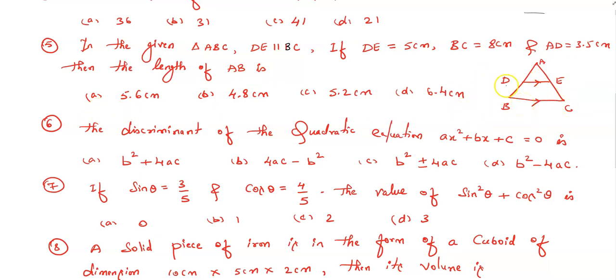Question number six: the discriminant of the quadratic equation ax² + bx + c = 0 is: option a) b² + 4ac, option b) 4ac - b², option c) b² ± 4ac, option d) b² - 4ac.